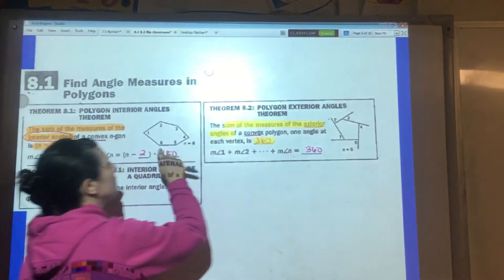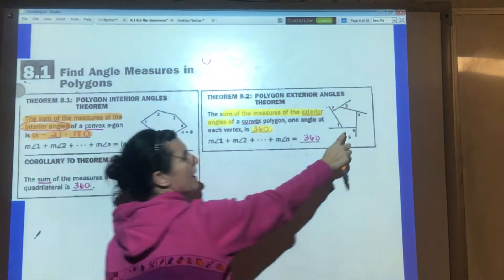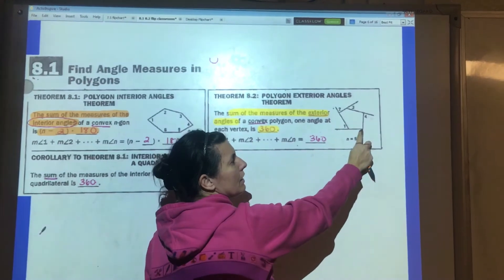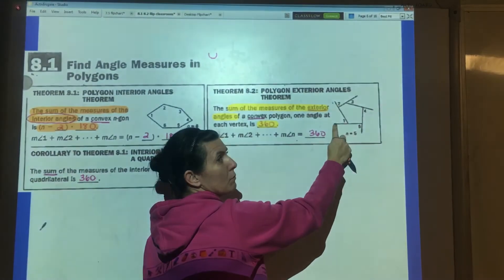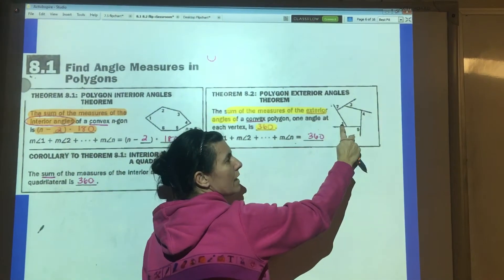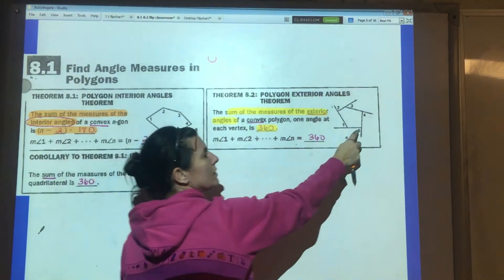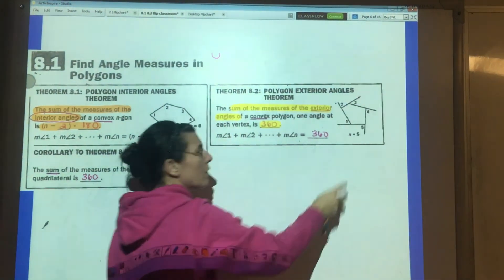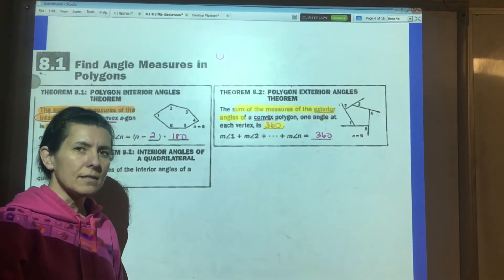This is exterior angles. Look at the difference between where inside angles are and where exterior angles are. If you take the sides of any polygon and extend them, that outside angle is what we're talking about.